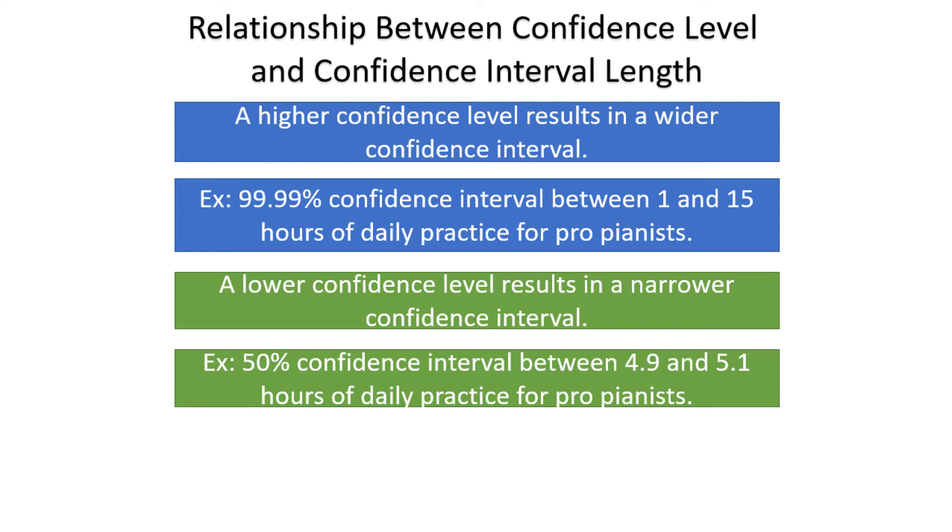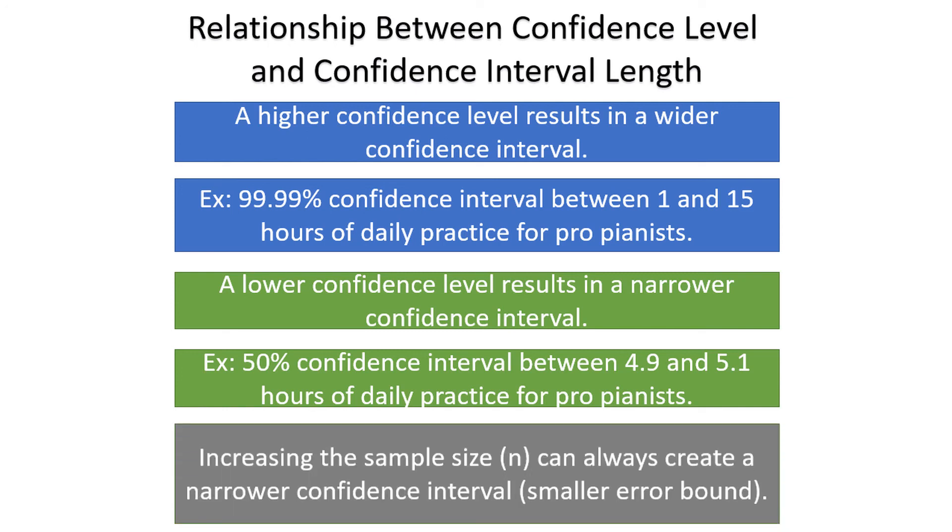The way to bypass all of this is just to take larger samples. The larger the sample size, the more narrow the confidence interval. A 99% confidence interval might be too wide and therefore useless for a small sample size, but it might become more narrow and worth using if the sample size is increased enough.